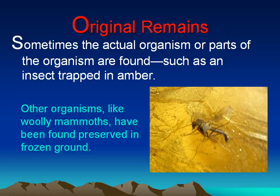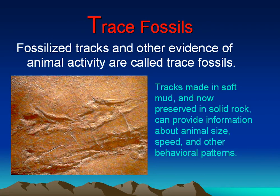Original Remains. Sometimes the actual organism or parts of the organism are found, such as an insect trapped in amber. Other organisms, like woolly mammoths, have been found preserved in frozen ground.